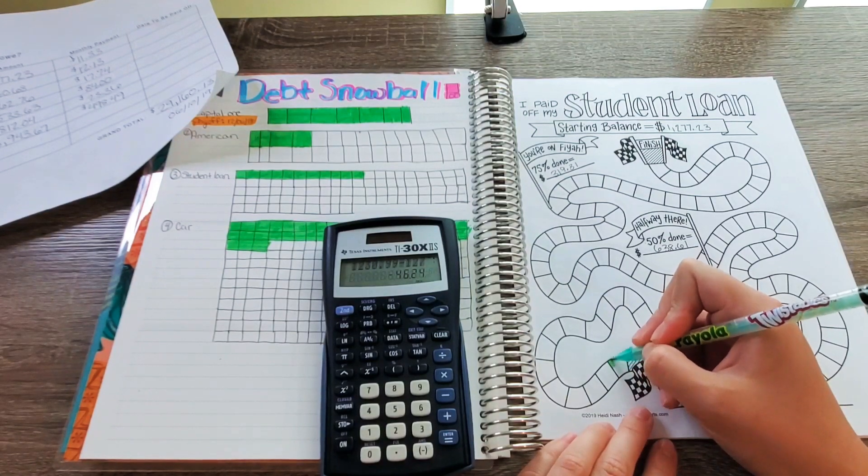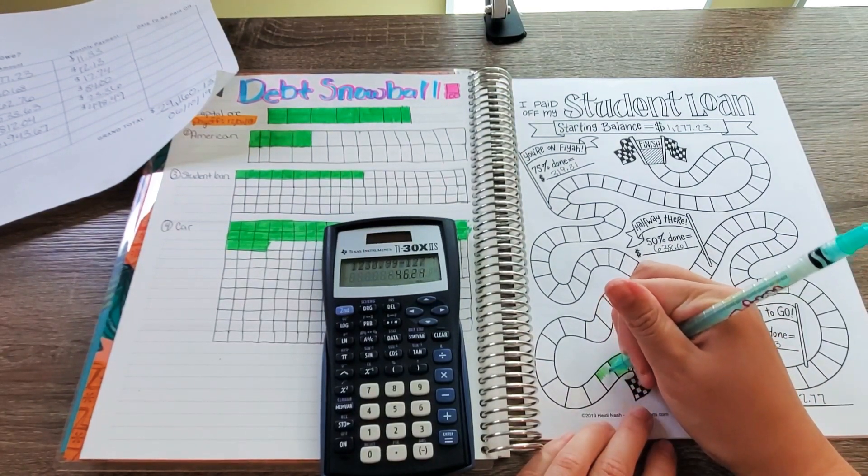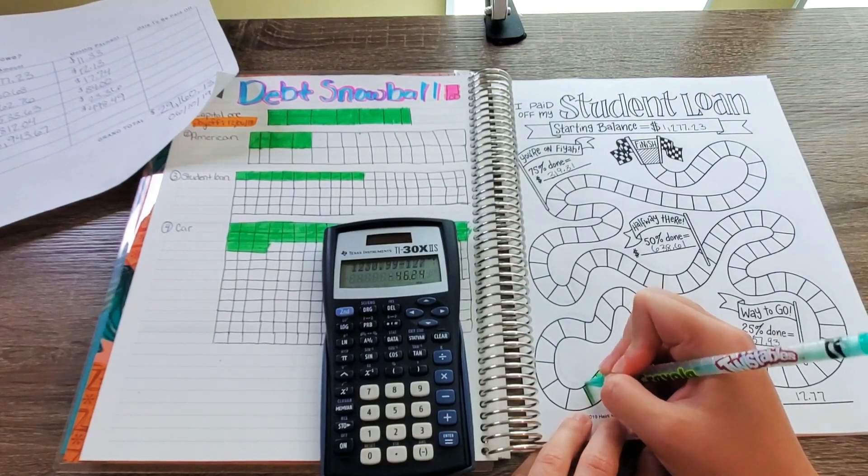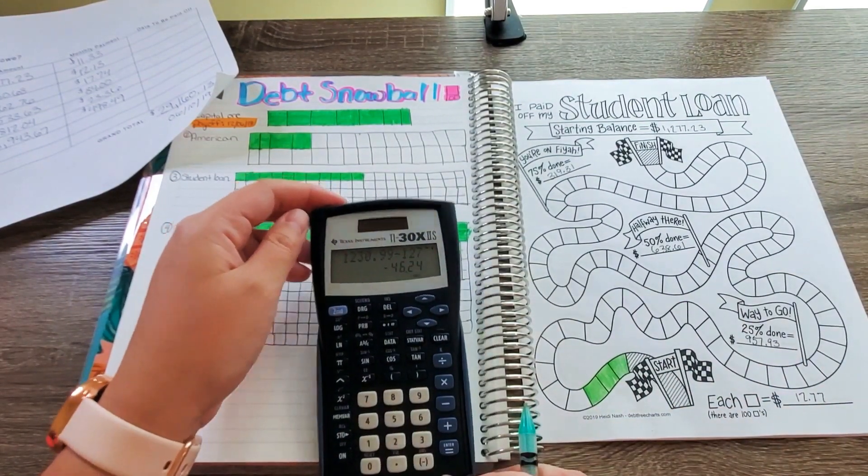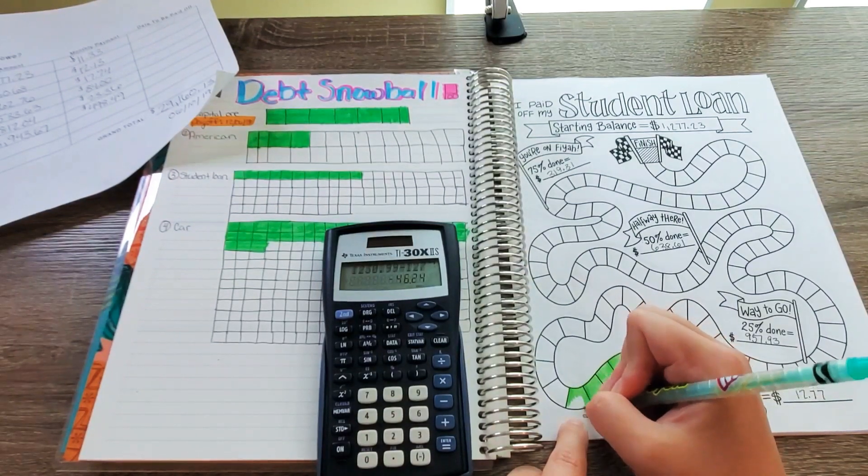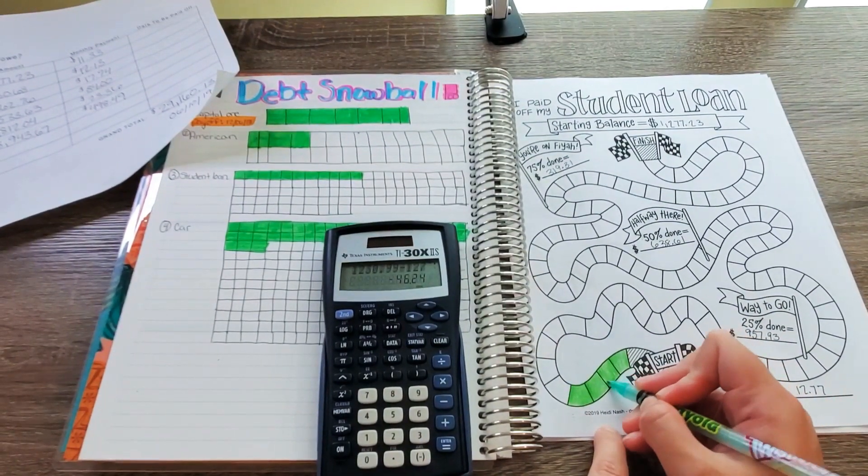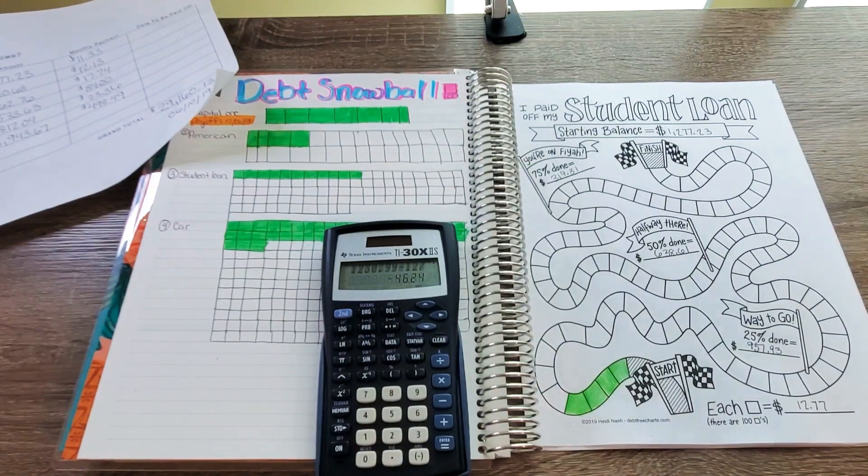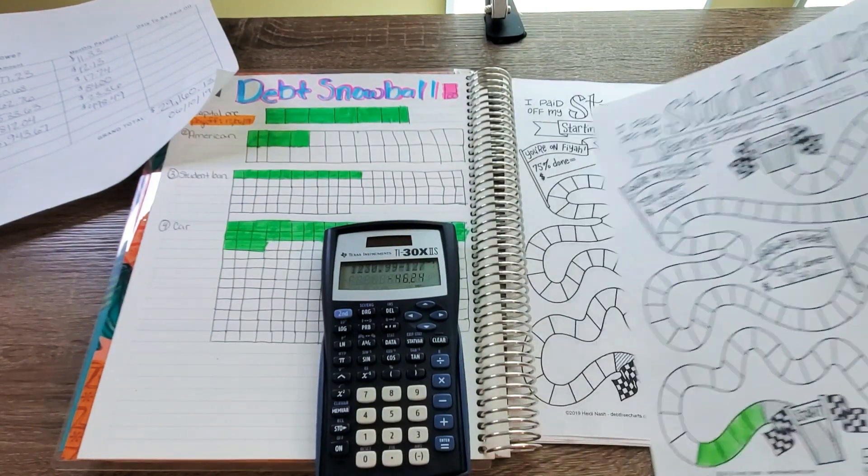Alright. So we're going to use just these regular old color pencils and we're going to color in. So that was $46. Alright, so we're going to do $1,277, 24, 32, we're just going to do and then 32, 45, alright, so we're coloring in 4 amounts, so that's super exciting, super happy about that.